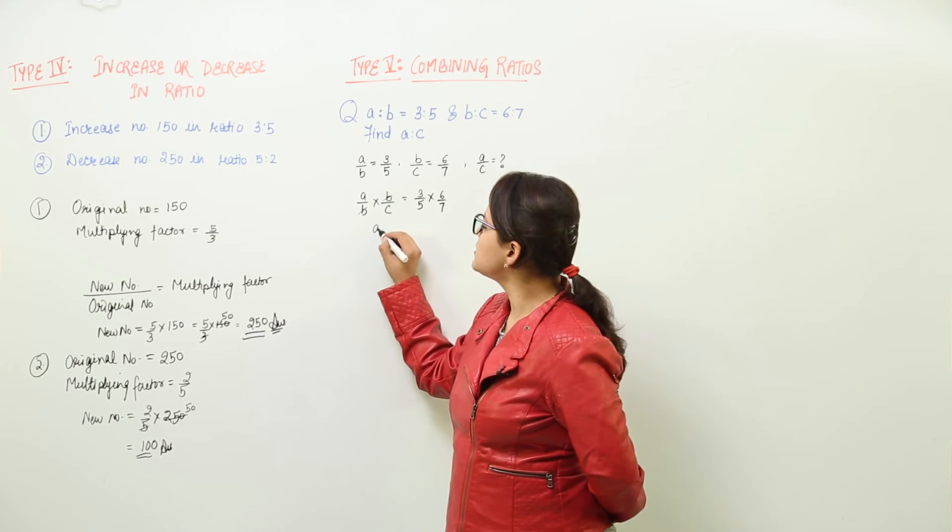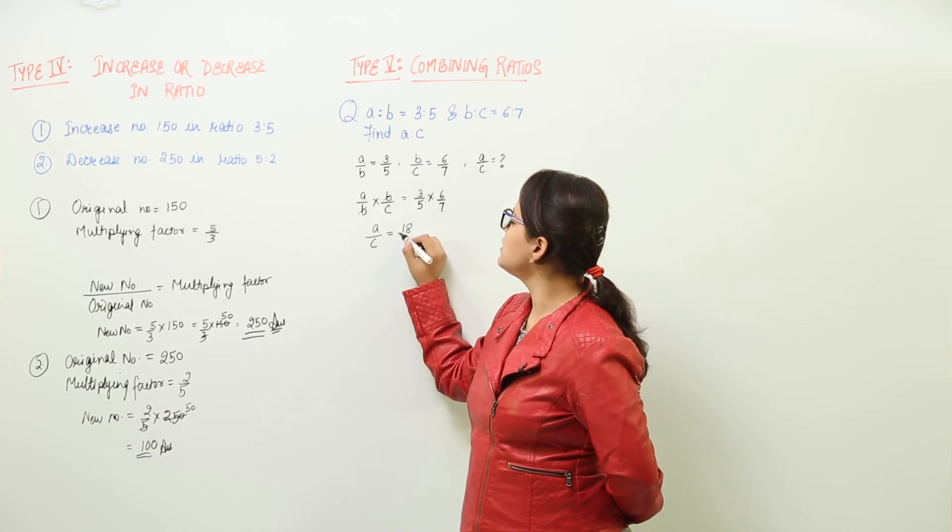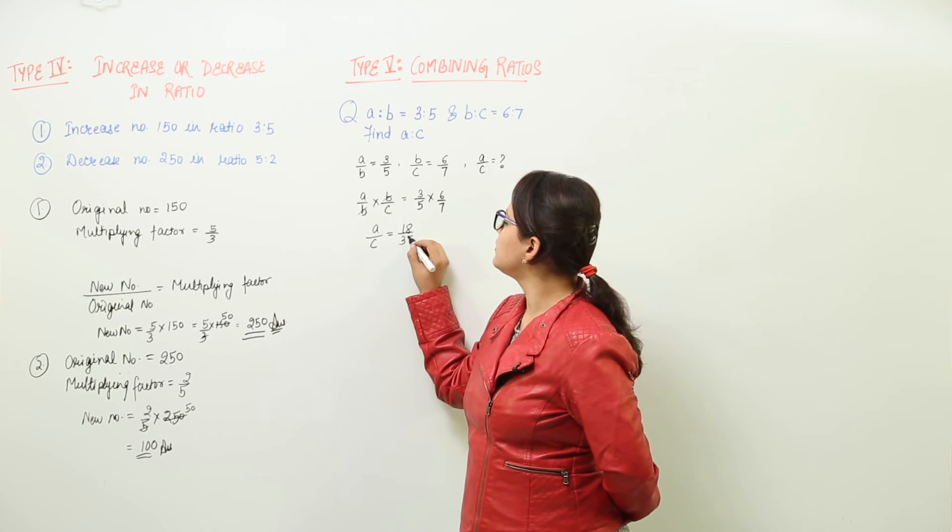So here we get A upon C equal to, what is 3 into 6? 18. And what is 5 into 7? 35.